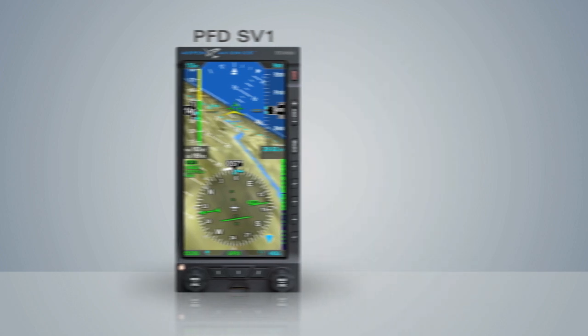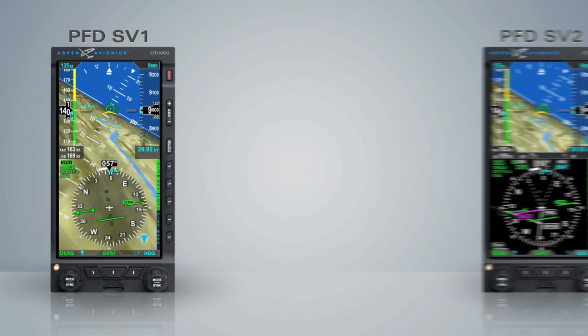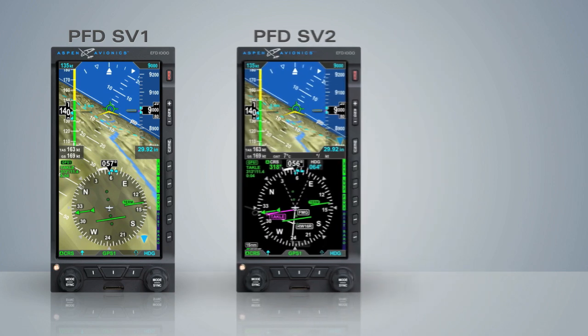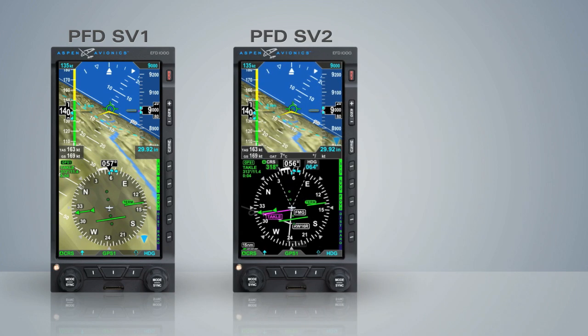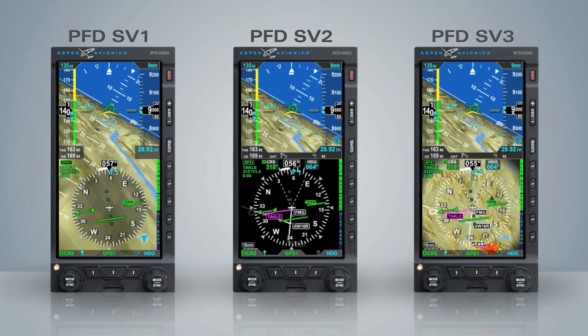Synthetic Vision 1 presents synthetic vision under the entire primary flight data area of the PFD. SV2 presents the standard nav display, while SV3 presents the nav display overlaying the high-resolution topo map.